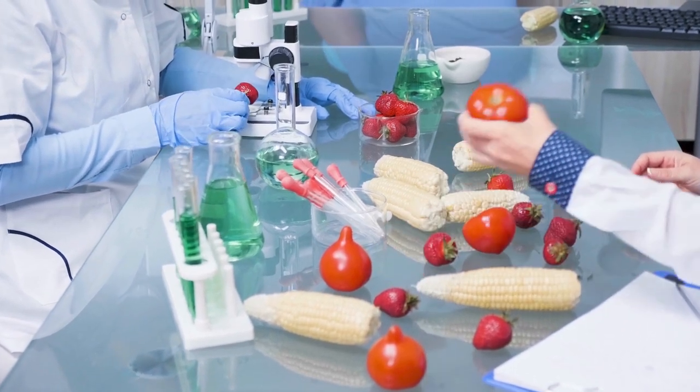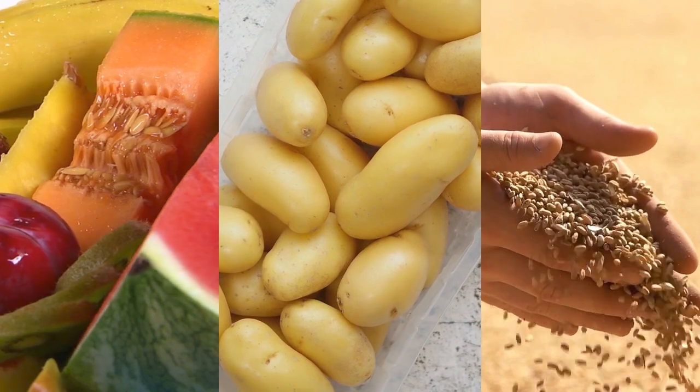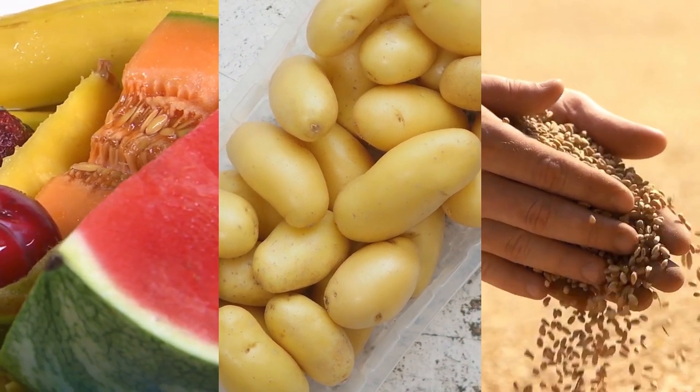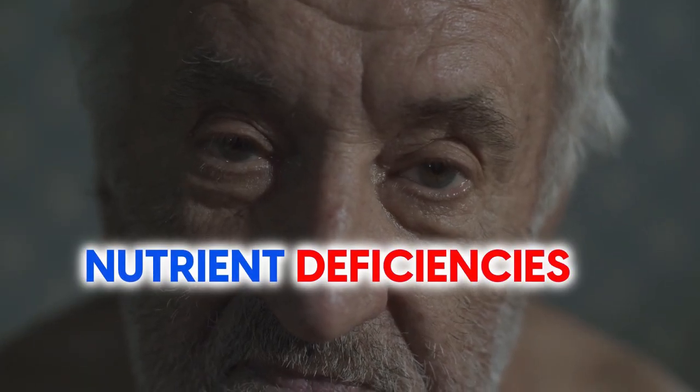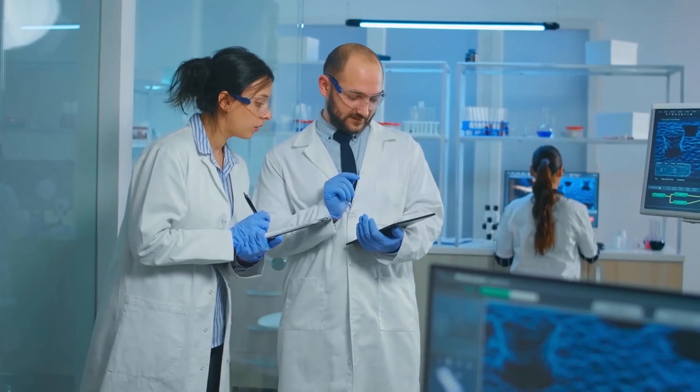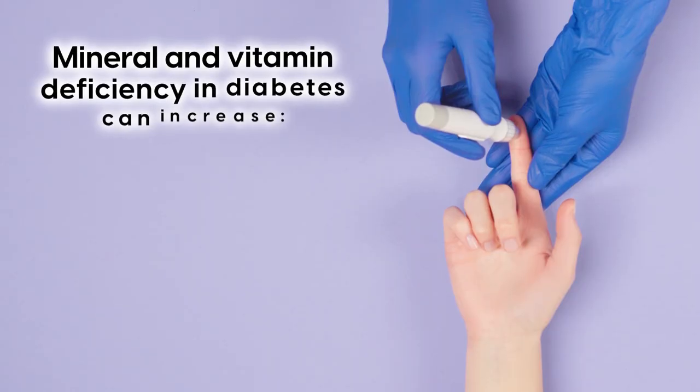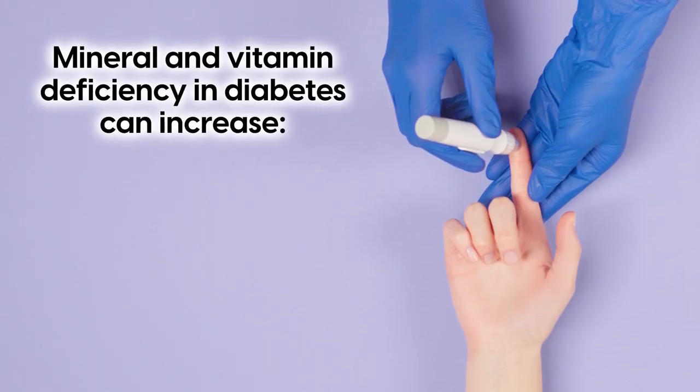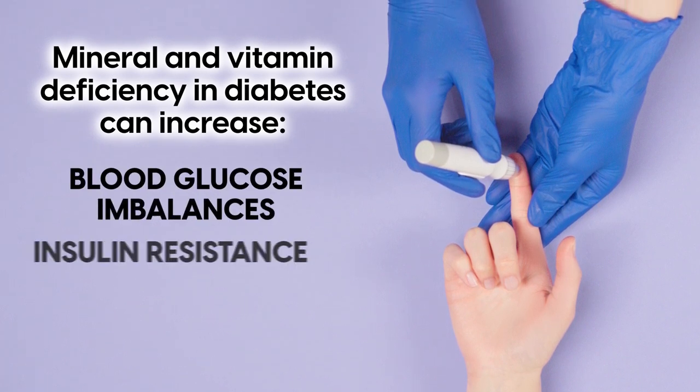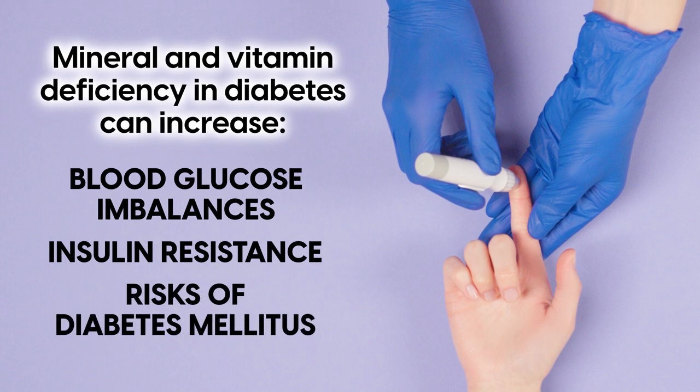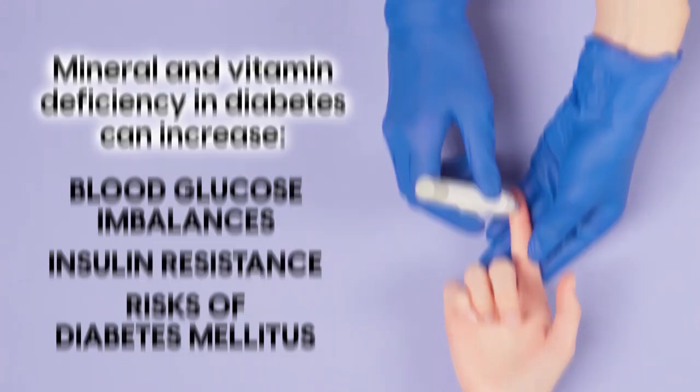Additionally, experts note that limiting various foods, such as fruit, starchy vegetables, and complex carbs can reduce the nutritional variety in your diet, and therefore lead to nutrient deficiencies. Many studies have observed that mineral and vitamin deficiency in diabetes can increase blood glucose imbalances, insulin resistance and risks of diabetes mellitus.